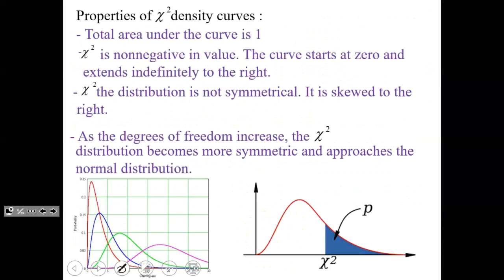If you look at the drawing in the lower left, the red line represents a single degree of freedom, the blue line two or three. As you progress to higher degrees of freedom, you become more normal, though it takes more degrees of freedom to get there. The picture on the right shows that we're always going to shade a one-tailed test with the chi-square, and that shaded area gives us our p-value.